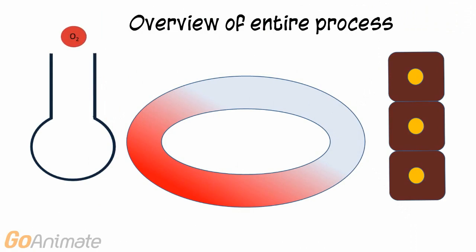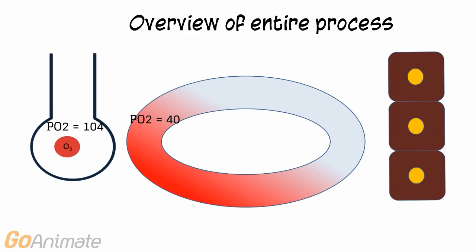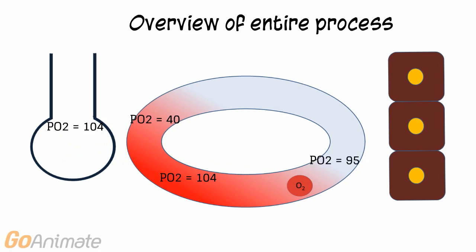Oxygen enters the lungs. The alveolar PO2 is 104 and the deoxygenated blood PO2 is 40. Oxygen diffuses into the blood, raising the blood PO2 to 104. The oxygenated blood PO2 drops to 95 and oxygen diffuses into the tissues that have a PO2 of 40, causing the deoxygenated blood PO2 to drop to 40.